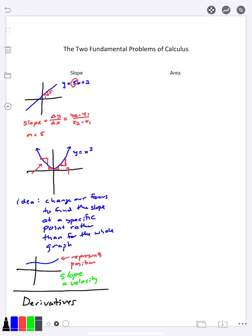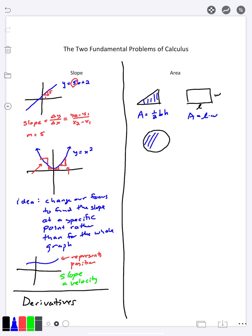The second problem that is fundamental to calculus is that of the area. In your geometry class you probably learned how to find the area of a triangle. The area would be one half base times height. Maybe if you learned about rectangles, you would have learned that the area is length times width. Maybe you remember if you have a circle, then you would know the area is pi r squared.